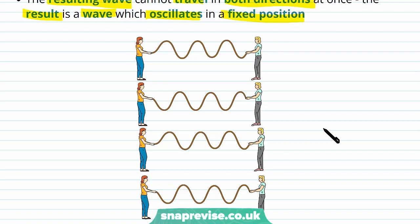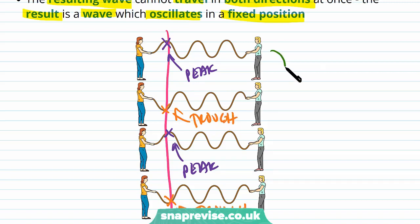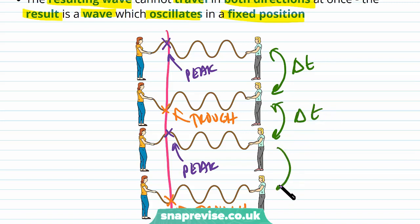Looking at the diagram, we can see the wave is not actually moving along — it stays fixed. A peak becomes a trough at the same spot, then a peak again, then a trough again, all at the same point. This occurs at fixed time intervals delta t, with the same time interval between each snapshot of the wave.